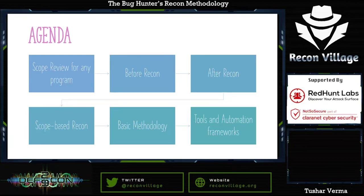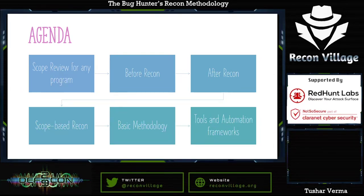The agenda for this talk covers: first, scope review for any bug bounty program; then before-recon and after-recon — what kind of information we get from the company we are testing; then scope-based recon methodology and its benefits; then the basic methodology, where my aim is to give you insight on using every single piece of information you gather to find new vulnerabilities and get paid.